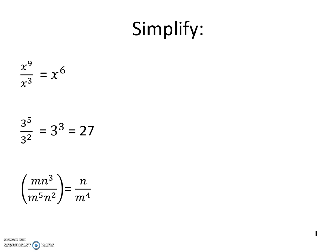And you still get x to the 6th. Then on the next example, 3 to the 5th over 3 squared is 3 cubed, which equals 27.